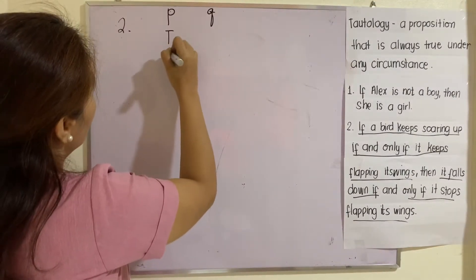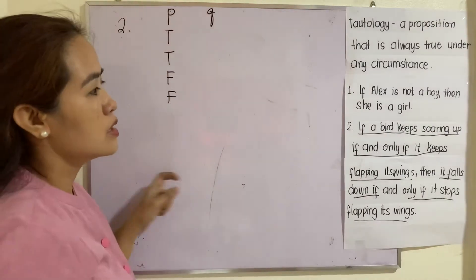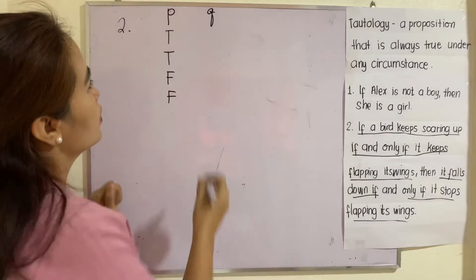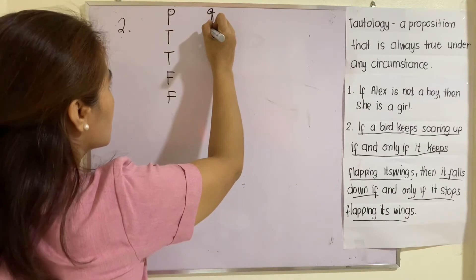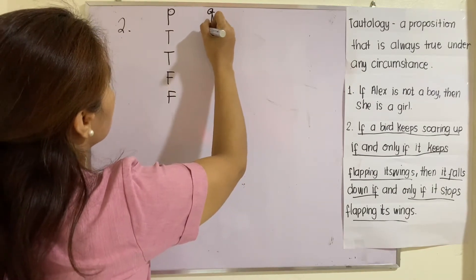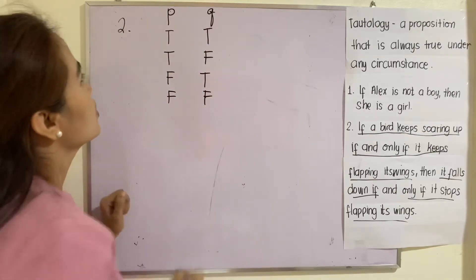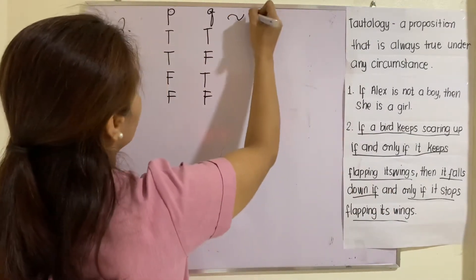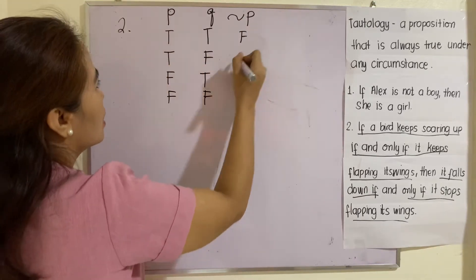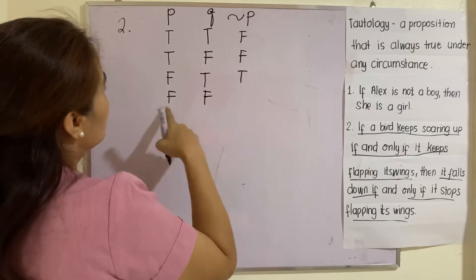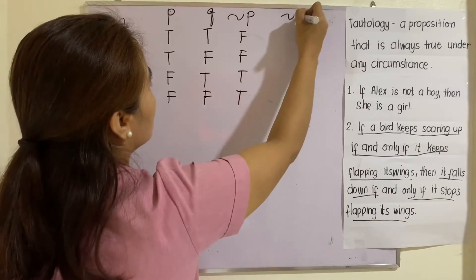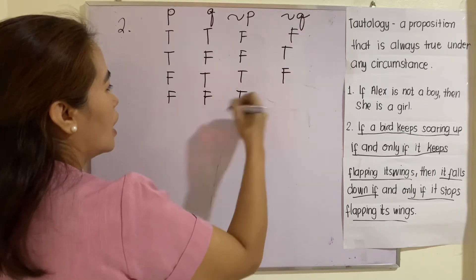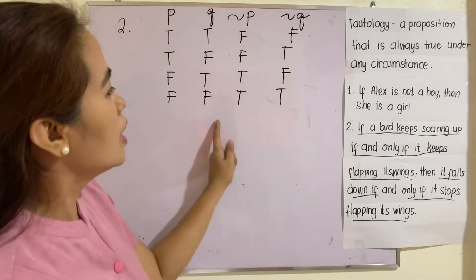The possibilities for P and Q are true-true, true-false, false-true, false-false. For not P, not true is false, not true is false, not false is true, not false is true. For not Q, not true is false, not false is true, not true is false, not false is true. Next, let us now translate this.